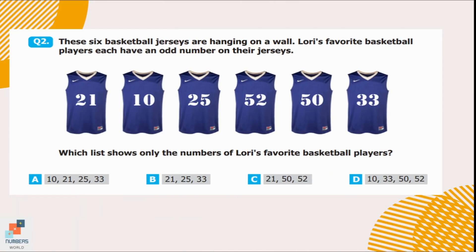Question number 2. These 6 basketball jerseys are hanging on a wall. Lorry's favorite basketball players each have an odd number on their jerseys. Which list shows only the numbers of Lorry's favorite basketball players? An even number is a number which comes in the table of 2, or in other words, it is divisible by 2 — like 2, 4, 6, 8, and 0. The rest of the numbers like 1, 3, 5, 7, and 9 are called odd numbers.